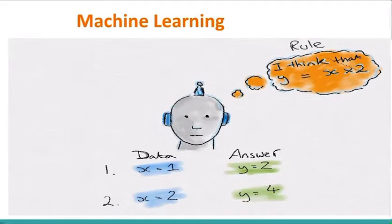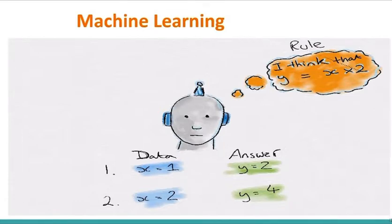Now you can see the difference between how machine learning works and how the traditional method works. In the traditional method, we have the dataset and we have a rule — that rule is our specification of how the system works, expressed as a model — and we generate answers. But in machine learning, we have the dataset and the likely answers, and what we need to do is figure out the function, the rule, that is behind the data.